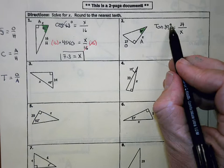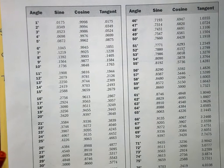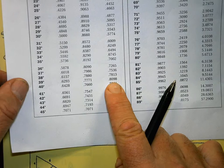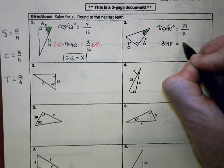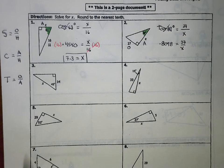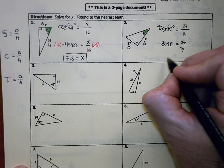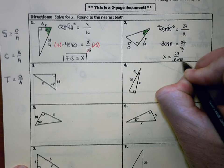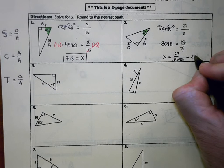I go to my chart and find the decimal equivalent for tangent 39 degrees — it's 0.8098. So 0.8098 equals 27 over X. Since X is in the denominator, I switch the two values: X equals 27 divided by 0.8098, which gives 33.3 for number two.